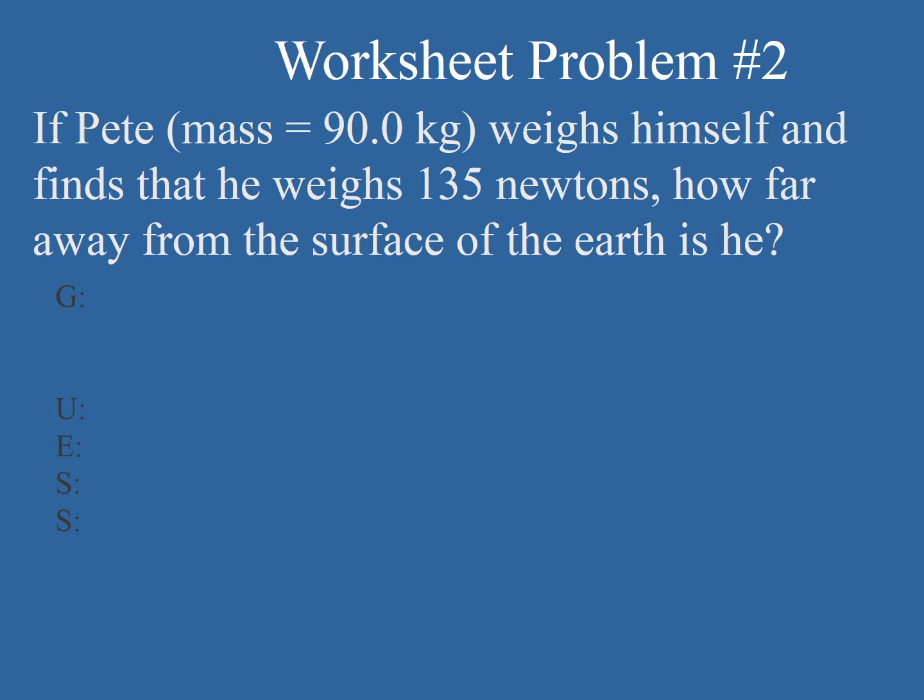Let's look at problem number two. If Pete, who has a mass of 90 kilograms, weighs himself and finds that he weighs 135 Newtons, how far away from the surface of the Earth is he? He's standing on a super tall building, a bunch of miles high probably, because we know that from our old equations, weight is equal to mg. Well, 9.8 or 10 times 90 kilograms, he should weigh about 900 Newtons, but he only weighs 135. So he's got to be really far away.